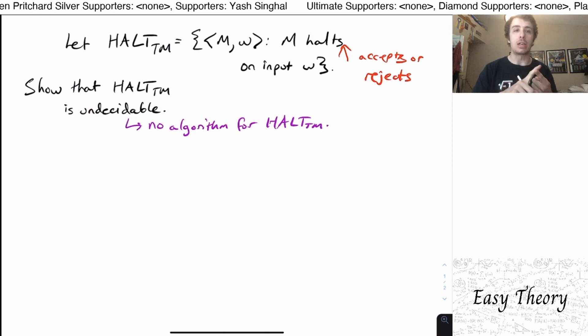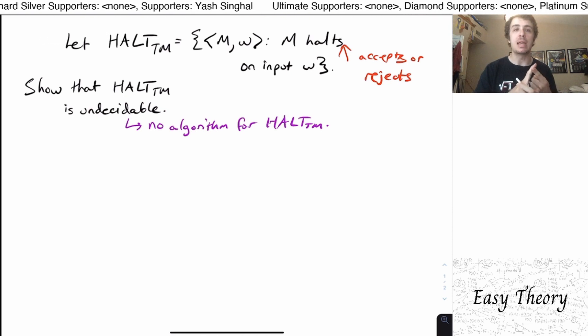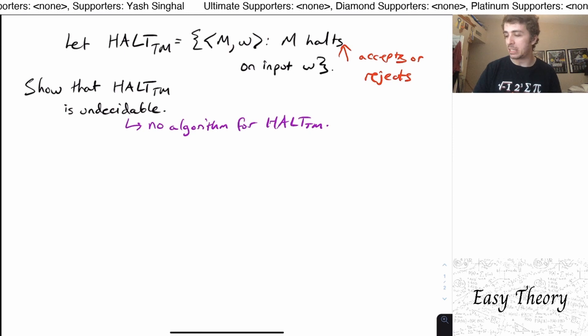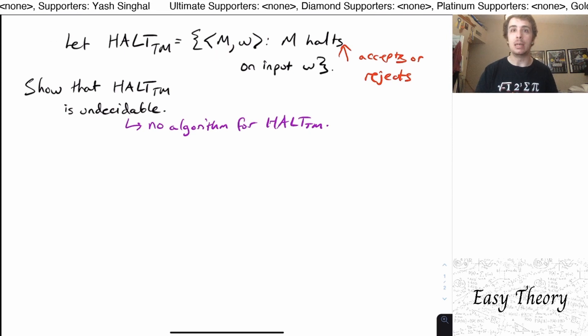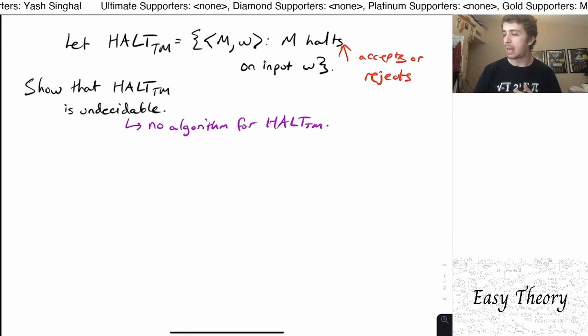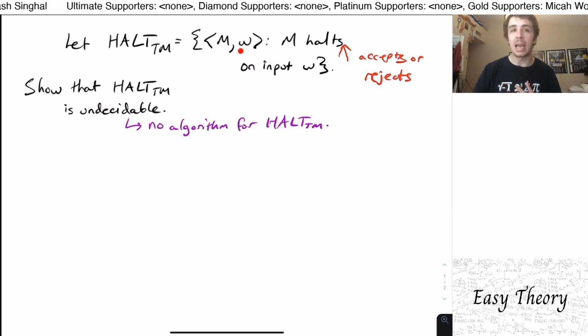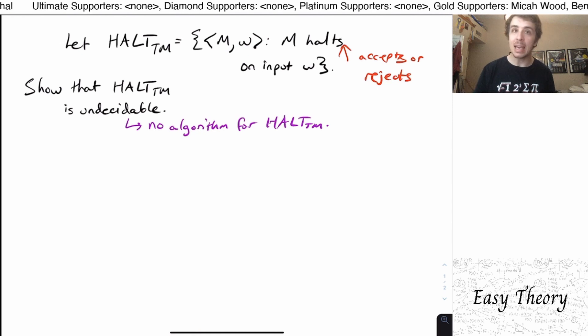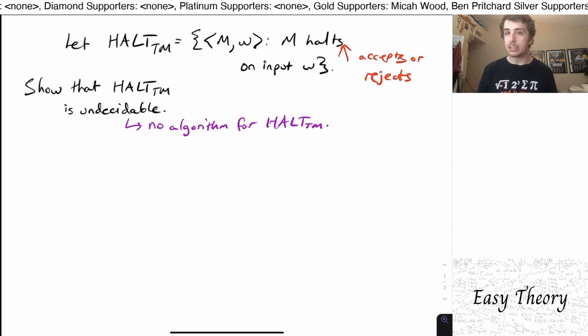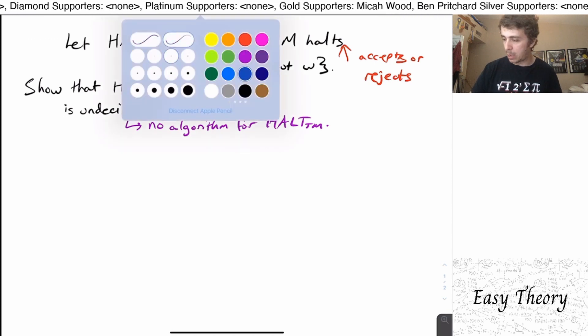And the other direction or the other possible route is to use Rice's theorem. But we can't use Rice's theorem here because that requires the strings in here to represent single machines. And here they represent a machine and an input. So we can't use Rice's theorem here, unfortunately. So what can we actually do here?